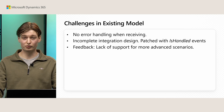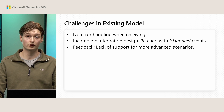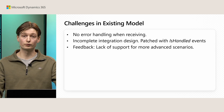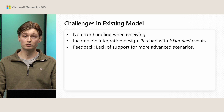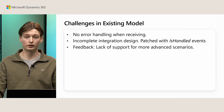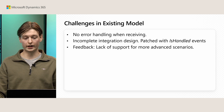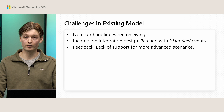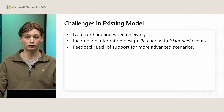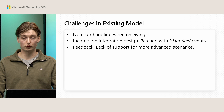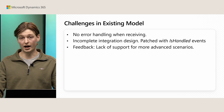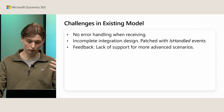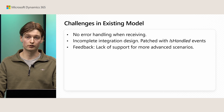There were some challenges in the existing model. First of all, we didn't have any proper error handling when doing the receiving logic in the framework, meaning that if you were trying to reach a service that is currently unavailable, we wouldn't be able to handle the framework logic properly. We also had some incomplete integration design that we wanted to improve — patched with some isHandled events, an approach we disliked and wanted to remove. Additionally, partners told us there was a lack of support for more advanced connector scenarios.